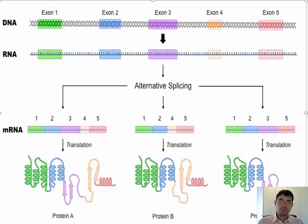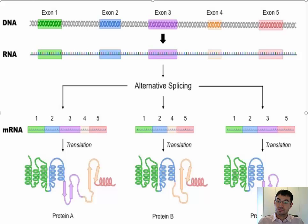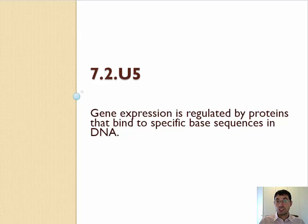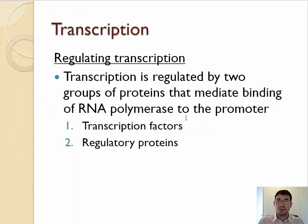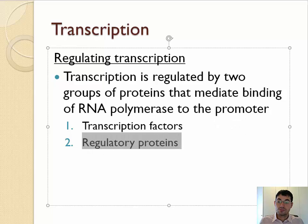Speaking of that, remember that we are complex organisms where our cells — which all have the same DNA — have specialized and differentiated to serve very different purposes. This really is all because of gene expression: which exons, which genes are being used and which ones are not. Gene expression — which genes are turned on and which ones are turned off — is regulated by proteins that bind to the DNA. Transcription is affected by two types: transcription factors and regulatory proteins.